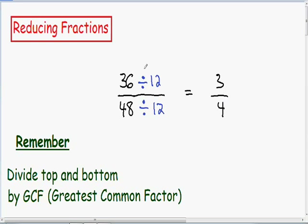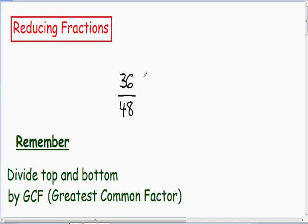So now I want to show you what you could have done if you didn't know that the greatest common factor was 12. Here again we have 36 over 48. You do know that 36 and 48 can be divided by 2 evenly, since they're both even numbers. So I'm going to divide both numbers by 2 — I'm going to divide 36 by 2, and whatever you do to the top you have to do to the bottom, and I'll divide 48 by 2.